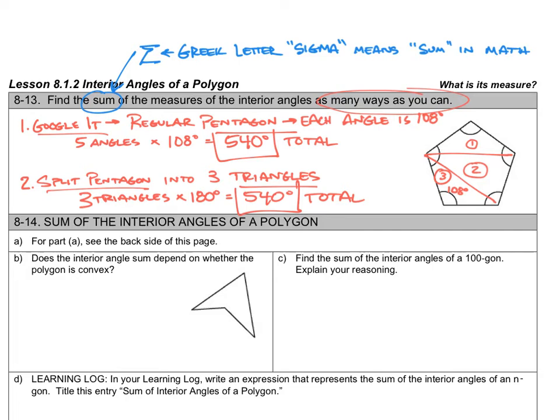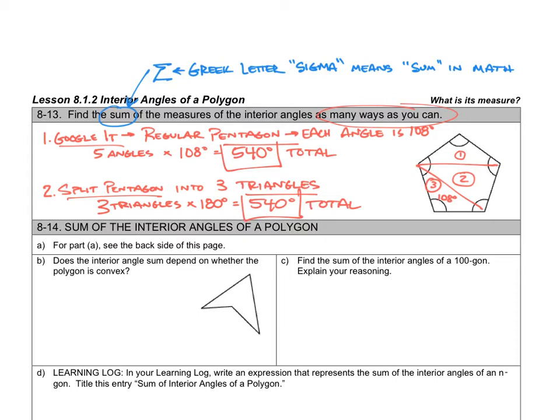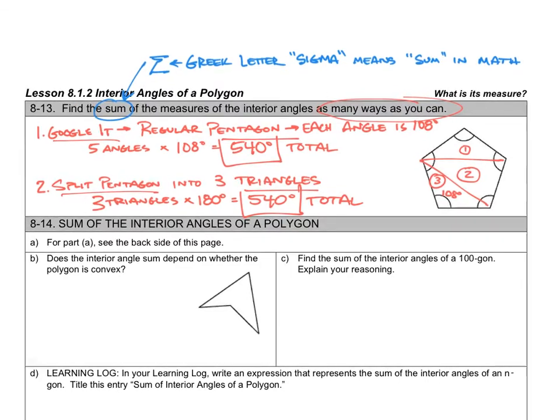Okay, so we're back at page one and let's see where we left off. Question 8-14, part A says for part A, see the back side of this page. We already did that.